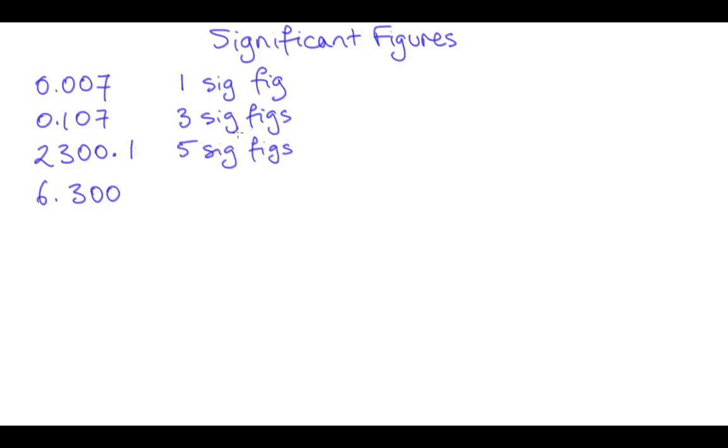Now all zeros to the right of a decimal place are significant. So for example, 6.300 has four significant figures. And that's because you're specifying that the value is 6.300 and not 6.301.